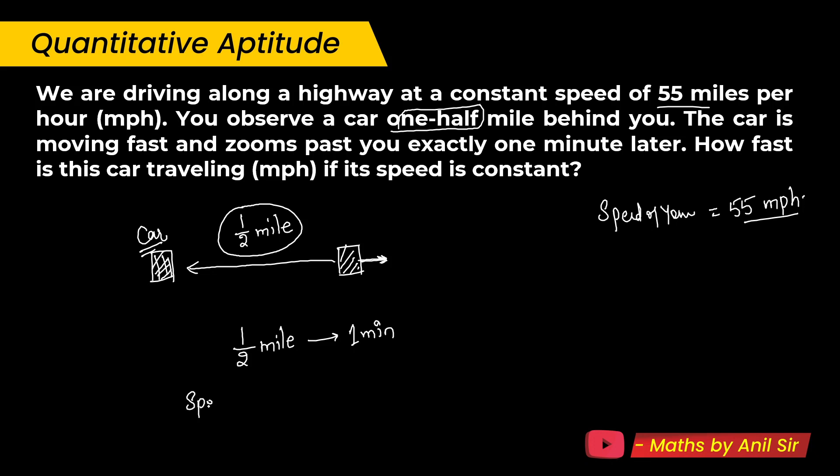We can say the speed of that particular car is half mile per minute. Because the speed is equal to what? Distance upon time, or you can say distance per time. We are talking about half mile per minute.